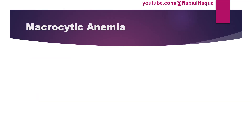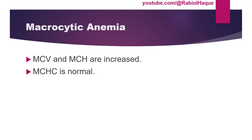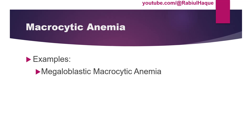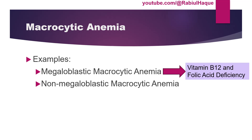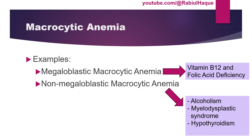The third group is macrocytic anemia. Here mean corpuscular volume and mean corpuscular hemoglobin are increased, while mean corpuscular hemoglobin concentration remains normal. Examples include megaloblastic anemia — caused by vitamin B12 and folic acid deficiency — as well as certain non-megaloblastic macrocytic anemias. Causes of non-megaloblastic macrocytic anemia include alcoholism, certain liver diseases, myelodysplastic syndrome, and hypothyroidism.